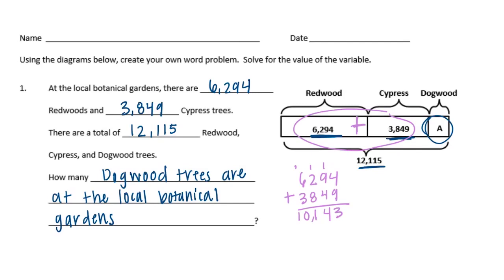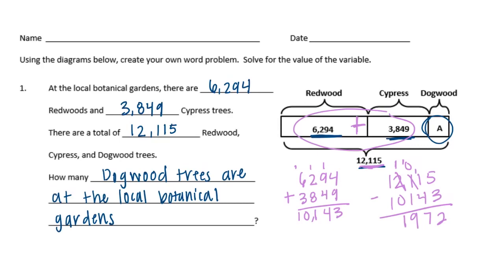Now to find the dogwood trees, subtract from the total: 12,115 minus 10,143. Five minus 3 is 2; 1 minus 4 we can't do, so borrow — 11 minus 4 is 7; 0 minus 1 we can't do, borrow — 10 minus 1 is 9; 10 minus 1 is 9; 1 minus 0 is 1. We end up with 1,972 dogwood trees.